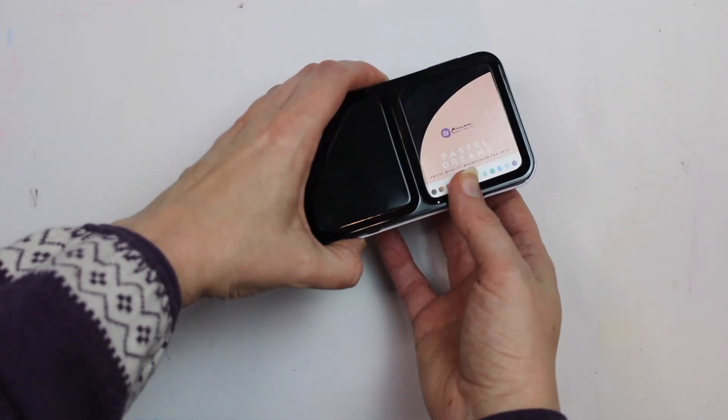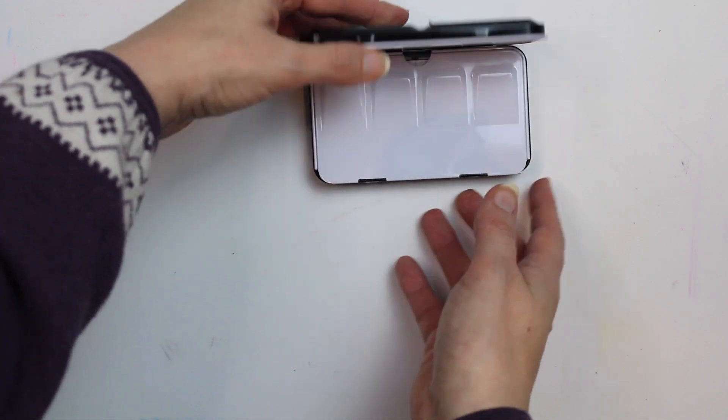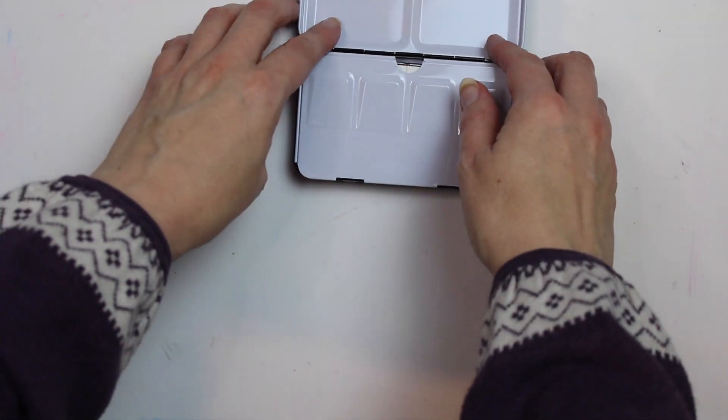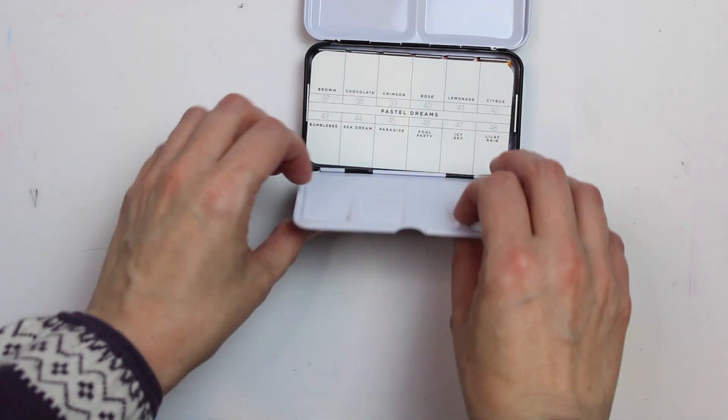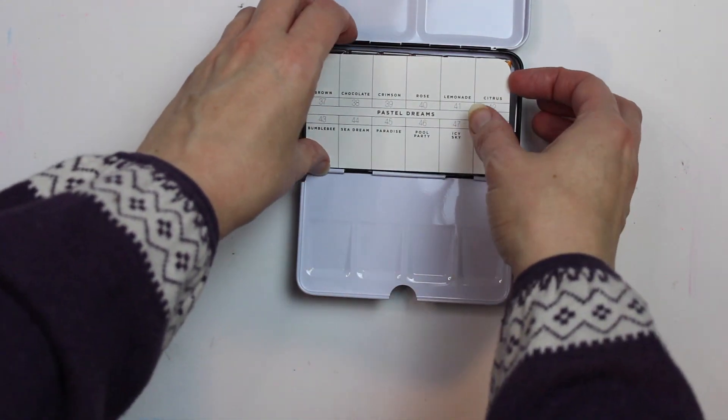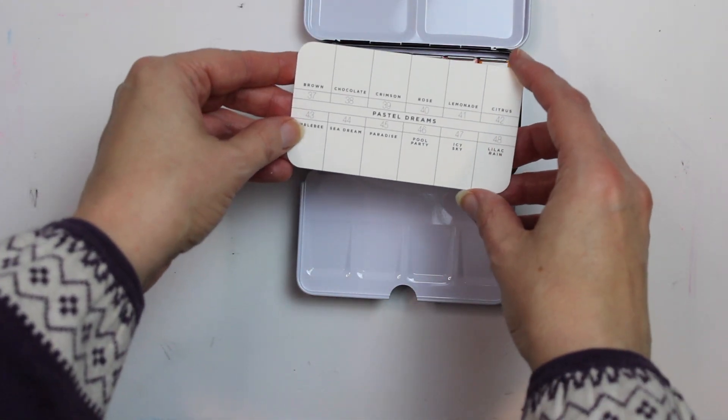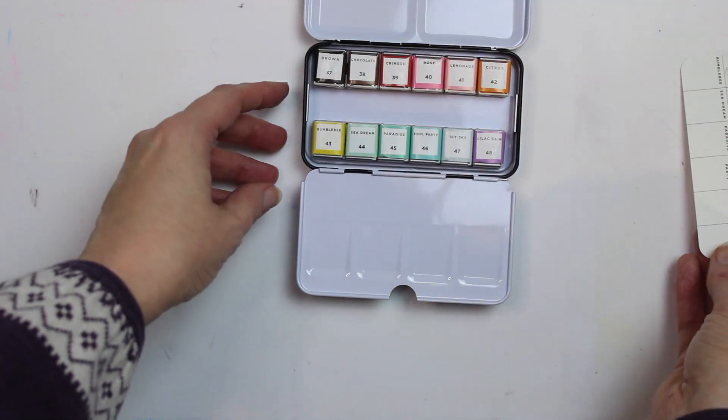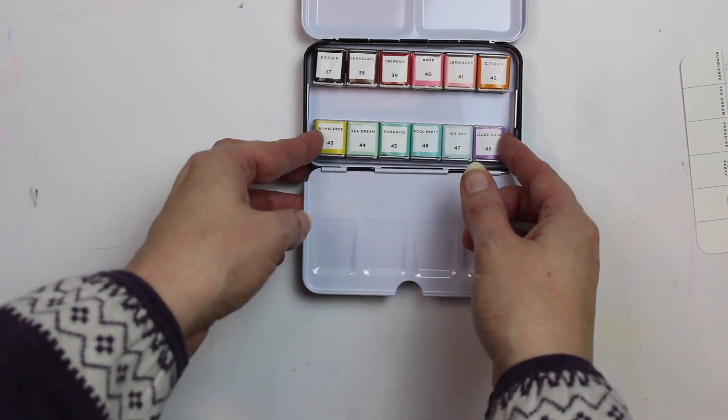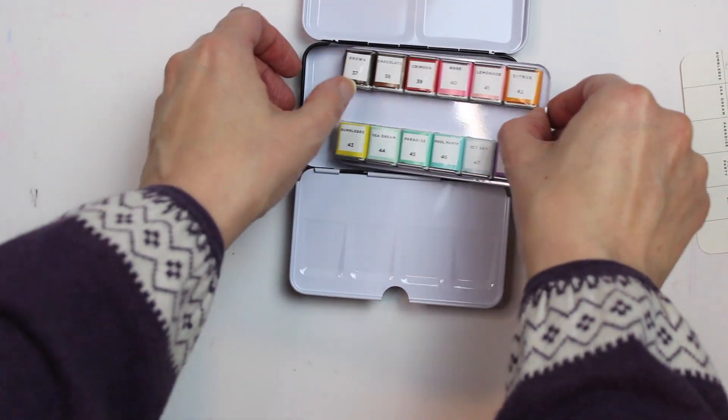It has this nice ring on the bottom so that if I decide to take the palette out on the go, I will be able to hold it while I'm painting. It has two palettes inside and this lovely swatch card which I will be using, and I really like the packaging of the pans.